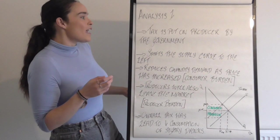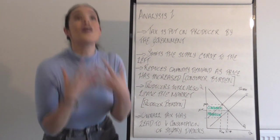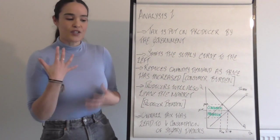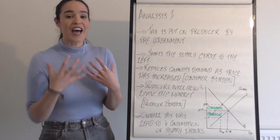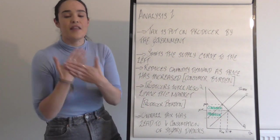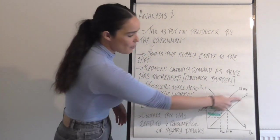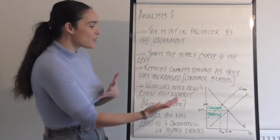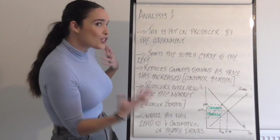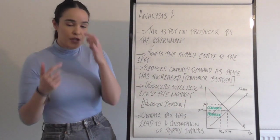My first point is that the tax is put on, and as soon as you see a tax question you know you have to include a tax diagram. So many times I read answers to tax-based extended questions and they don't have a tax diagram — that is the first thing you should draw. The tax is put on the producer by the government, so this is going to shift the supply curve to the left, reducing quantity demanded because of the price increase and the consumer burden.